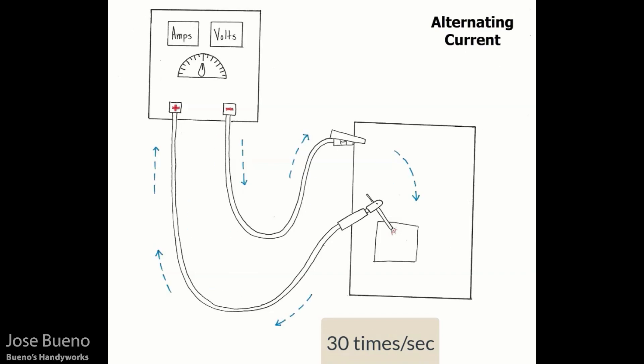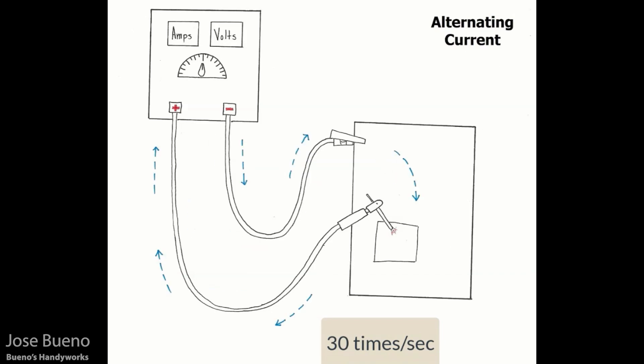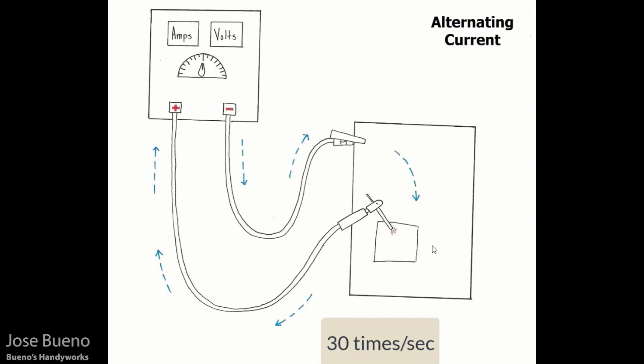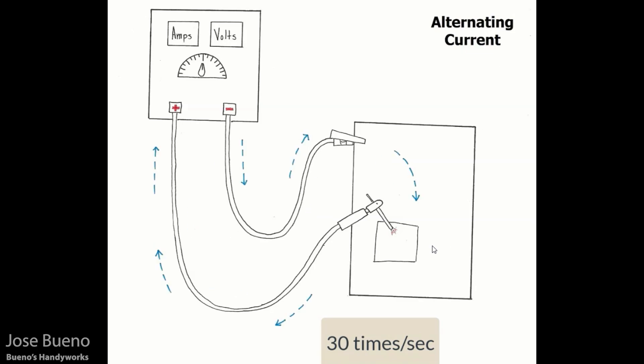Now for heat distribution with alternating current. If you recall, DCEP and DCEN each had different heat distributions. With AC, the heat distribution is 50/50 — 50 percent focused on the electrode and 50 percent focused on the workpiece. This changes some characteristics of the arc and the weld, but we'll get into that when the time comes.